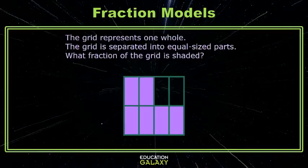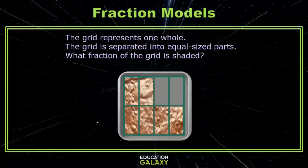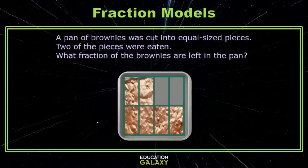Okay, now we have a fraction grid. It's one whole grid cut into equal-sized parts, and we're talking about the shaded parts. But of course, this would be more fun as brownies. So, a pan of brownies was cut into equal-sized pieces, and two of the pieces were eaten. And we want to know what fraction of the brownies are left in the pan.